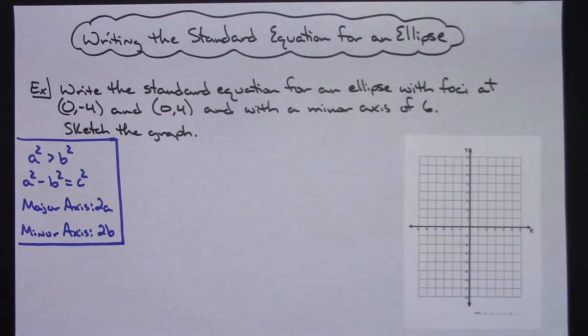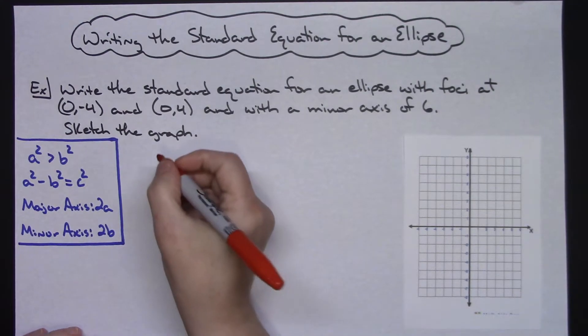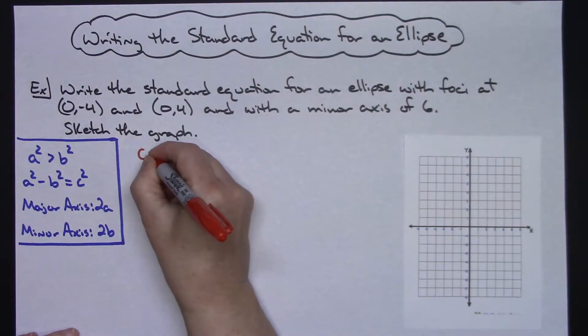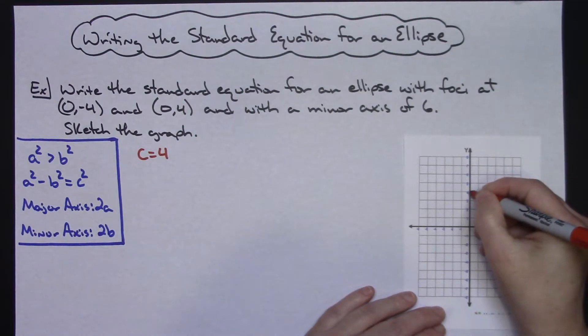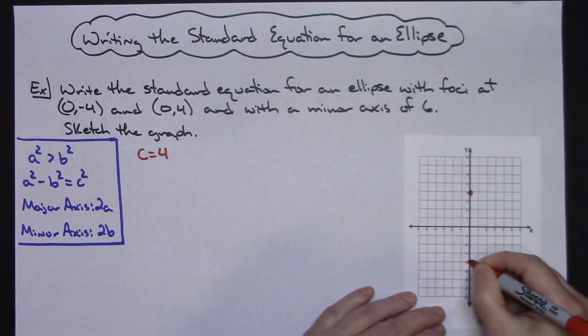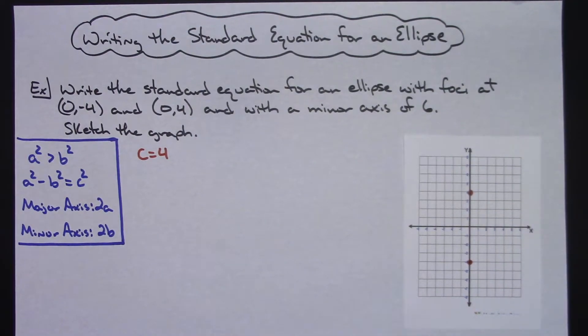So let's go ahead and write that down. So C equals 4 because those are your focus, so let's go ahead and put those on there at (0, 4) and then (0, -4). So there's my two focus.